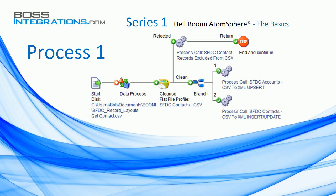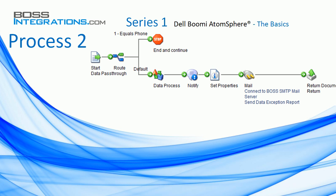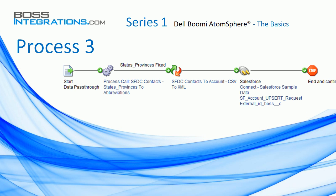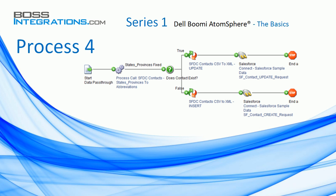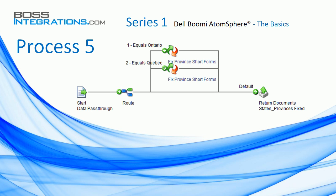We're going to break down this integration scenario into five processes. Process 1 is a top-level calling process, and it calls three subprocesses. Process 2 is an email process that emails out contact records with invalid phone numbers. Process 3 upserts account information into salesforce.com. Process 4 updates and inserts contact records into salesforce.com. Process 5 is a subprocess called from processes 4 and 5, and it replaces province fields with their abbreviations.